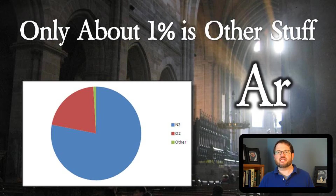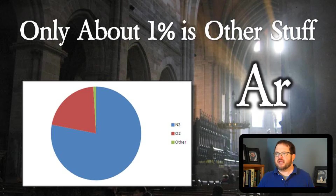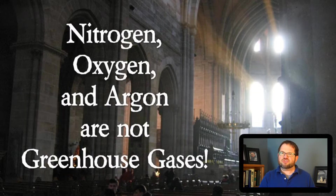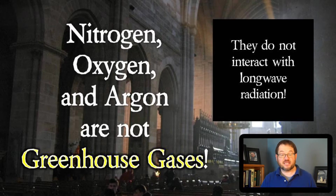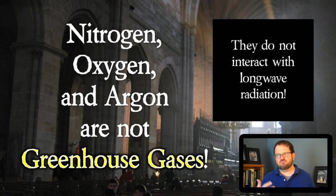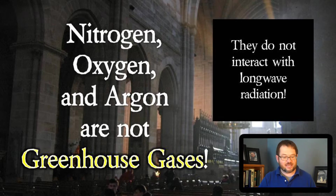Of that remaining 1%, a big chunk is argon — A-R — just another inert gas in the atmosphere. Nitrogen, oxygen, and argon all share the property of not being greenhouse gases. They have important roles in the atmosphere, but none of them are part of the greenhouse effect or the carbon cycle. What makes them non-greenhouse gases is that they don't interact with long-wave radiation — they don't absorb it or emit it efficiently.